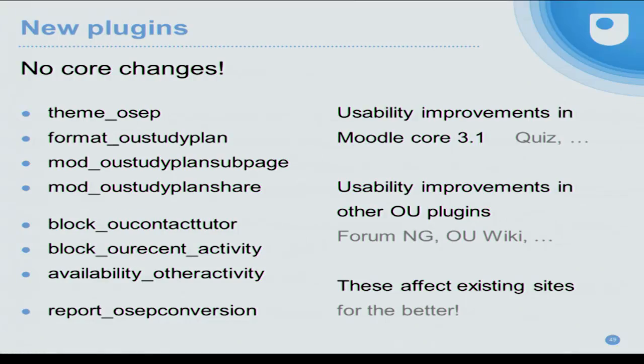A quick summary: we have implemented this without making any changes to Moodle Core. The key bits are a new theme, a new course format, and new activities for subpages. Then there are some other plugins — extra new blocks, a new conditional availability plugin, and of course the conversion tool. I'm lying slightly — some usability improvements affected our existing activities like ForumNG or OUWiki, and those were good ideas so we made those changes in the tools, which will affect the old theme as well as the new theme. Similarly, for the quiz module in Moodle Core, some good ideas have gone into Moodle Core, so if you upgrade to Moodle 3.1 you'll get those usability improvements.